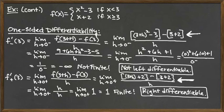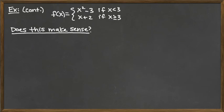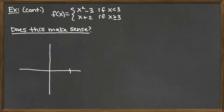Now let's look at what this means graphically. The piecewise function consists of a parabola opening upward, shifted down 3, defined for x to the left of 3. When we approach 3 from the left using the parabola, plugging in 3 gives 3 squared minus 3 equals 6. So at x equals 3, the parabola has an open circle at height 6. The parabola itself goes all the way down to negative 3 at its vertex.